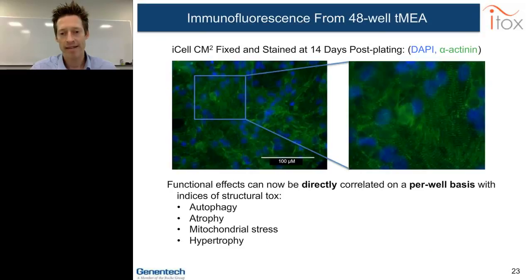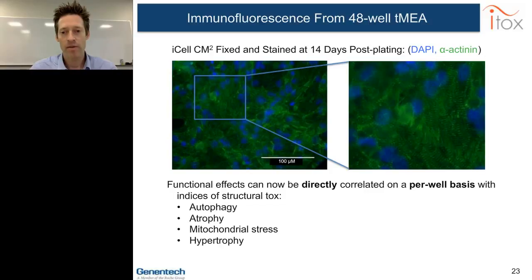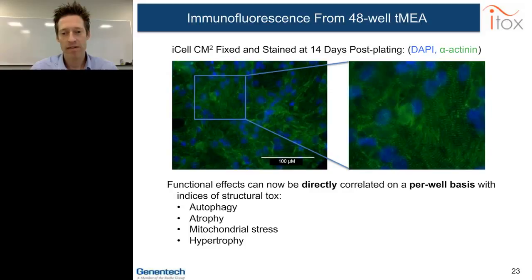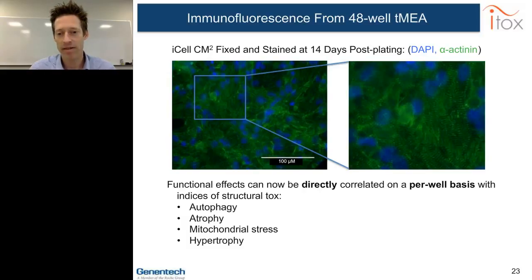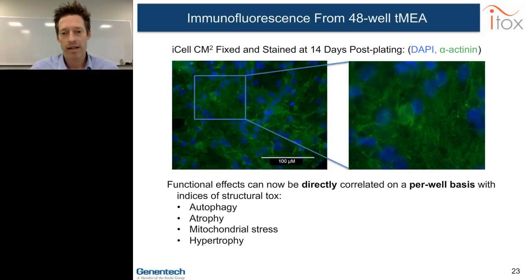As a first pass, we've applied common high-content labels to the TMEA plate: DAPI nuclear stain in blue and alpha-actinin to stain the sarcomere in green, showing nice striated sarcomere structure. We're still working out how to better define individual cells — they're packed quite densely in this plate — so we can probably plate more thinly or use an additional cell-outlining label. This is in progress and will certainly be optimized over time.